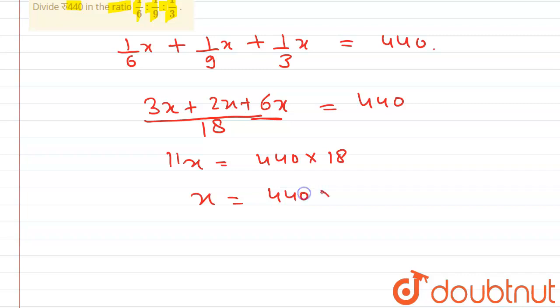Here 11 into 40, so here 4 into 8 is 32, we carry 4. 4 plus 4 is 8, that is 7. So here x is equal to 720.